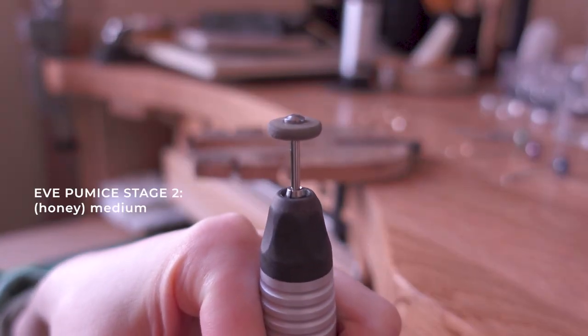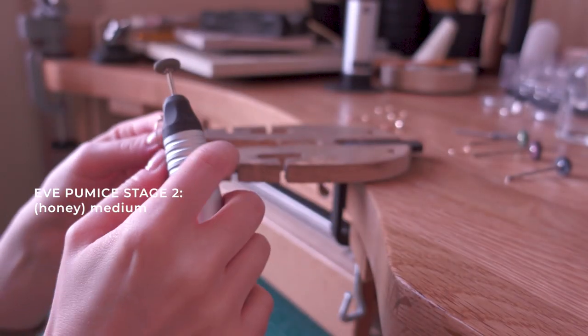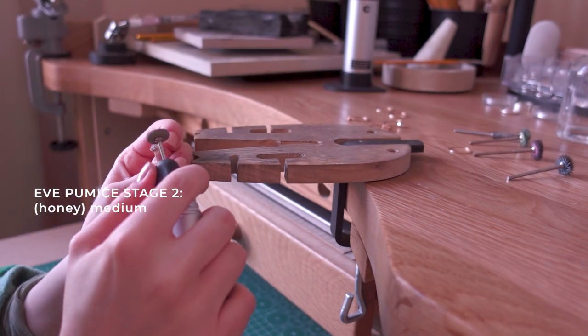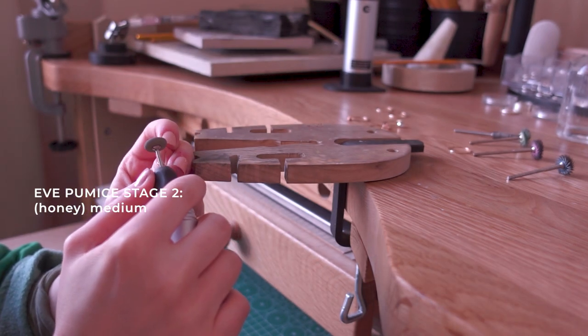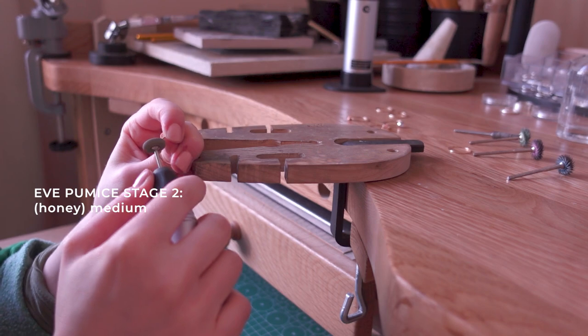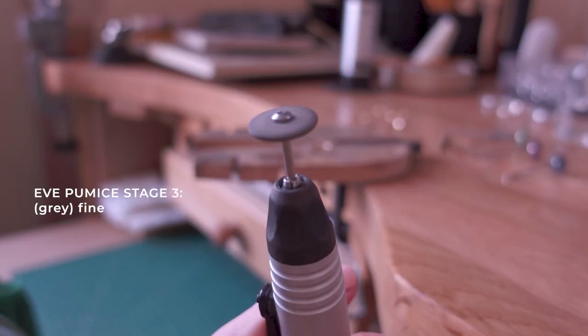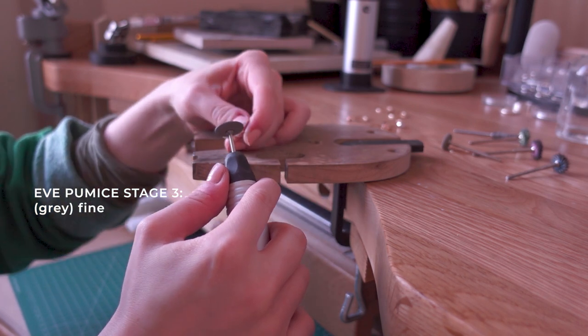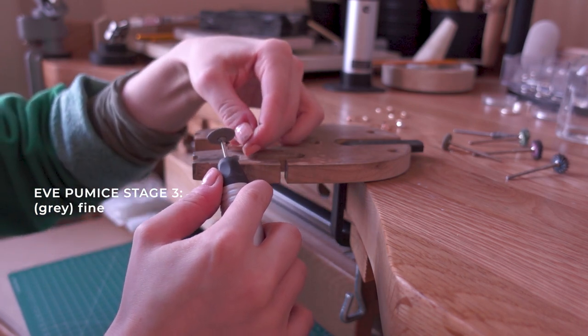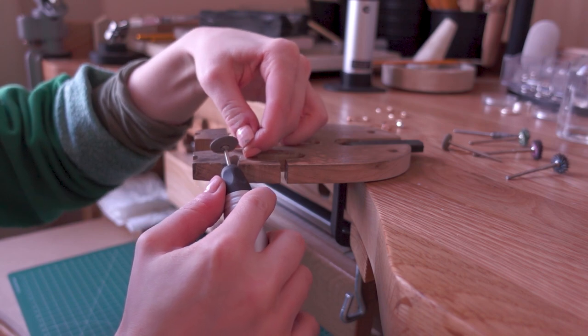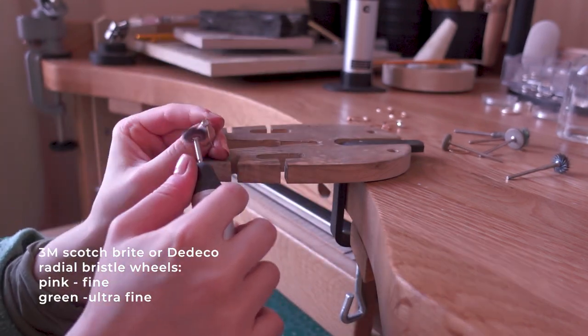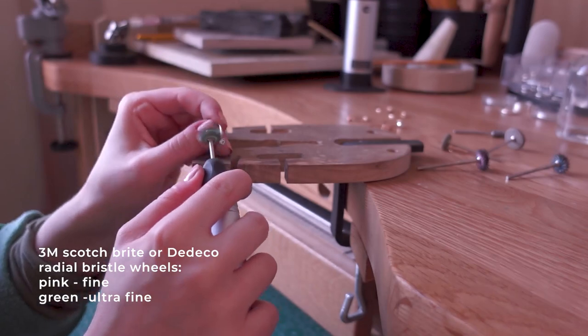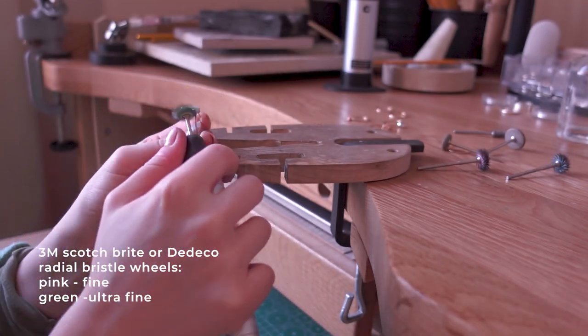Now I'm going to clean the edge around the gemstone after setting. So I'm going to start with this Yves Pumis stage two which is medium. And then I'm going to move on to stage three which is fine. And it's going to pre-polish it actually as well. But after I finish with that I'm going to use brussel wheels in pink and green to polish it and just finish it off.